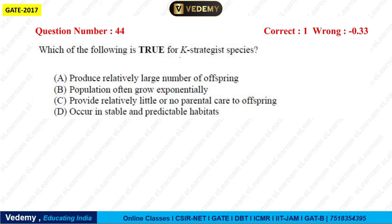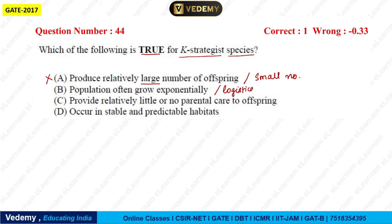Next question: Which statement is true for K-strategist species? Option A — they produce relatively large numbers of offspring — FALSE, K-selected species produce small numbers. Option B — the population often grows exponentially — FALSE, it grows logistically. Option C — they provide little or no parental care — FALSE, they provide significant parental care. Option D — they occur in stable and predictable habitats — TRUE. K-selected species are found in stable and predictable habitats. Answer is D.